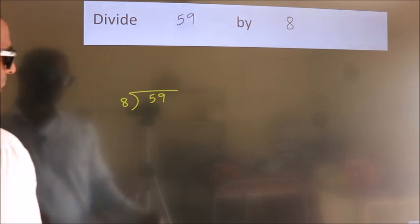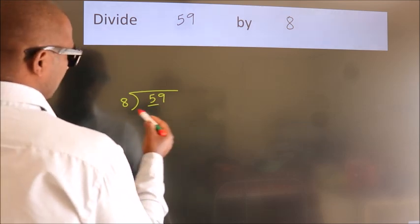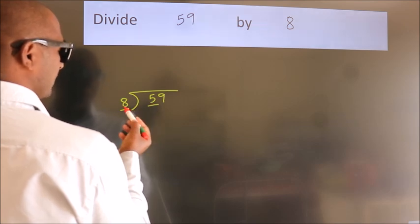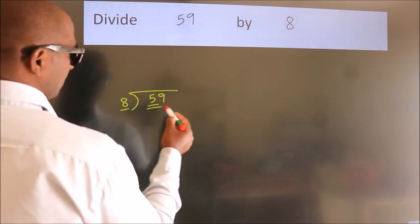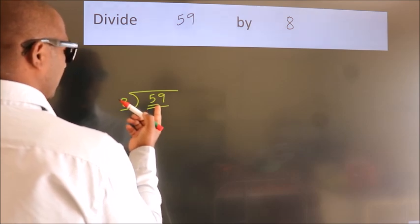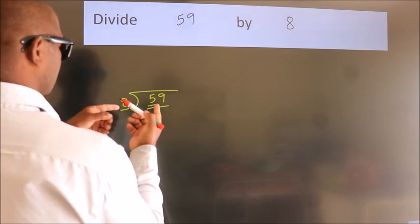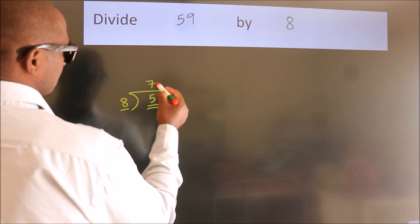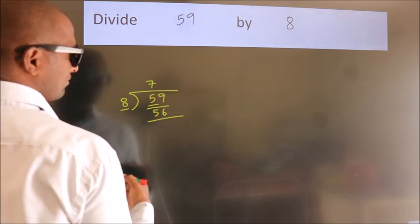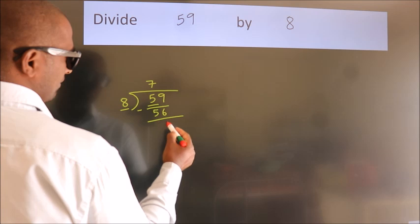Next, here we have 5, here 8. 5 is smaller than 8, so we should take 2 numbers: 59. A number close to 59 in the 8 table is 8 times 7 equals 56. Now we should subtract. We get 3.